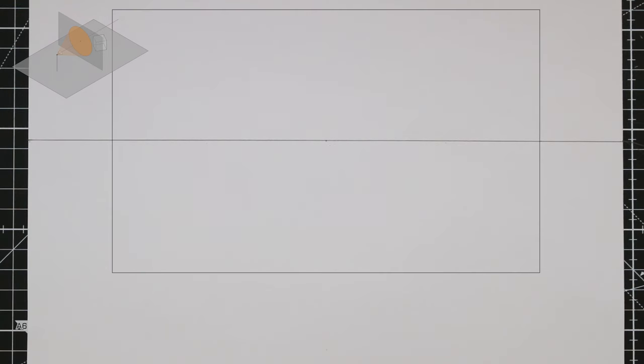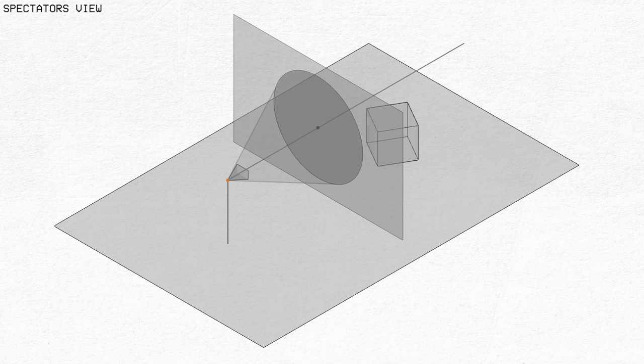And this can be any size you want, think of it as the border of your drawing. So now we need to set a location for our camera by establishing a station point. Now looking at this spectator's view of what we are translating over onto paper, you might be wondering, how do you even take a point in a three dimensional space like this and project it onto a two dimensional surface?